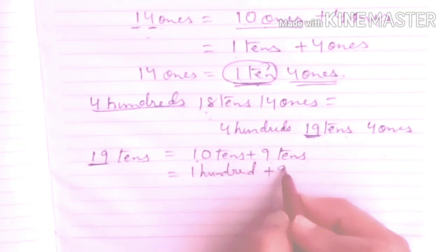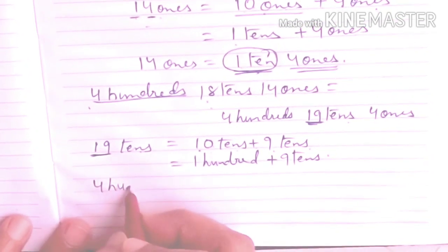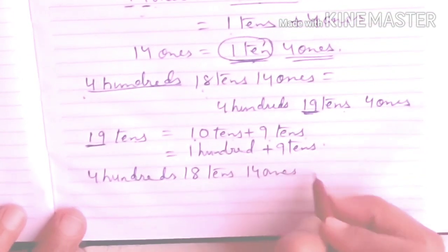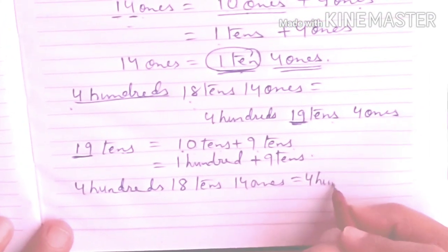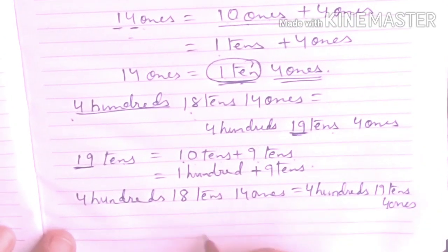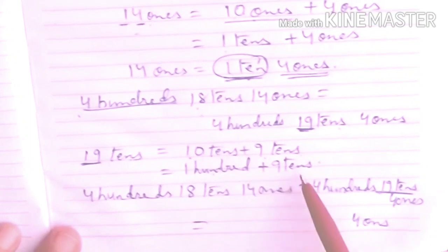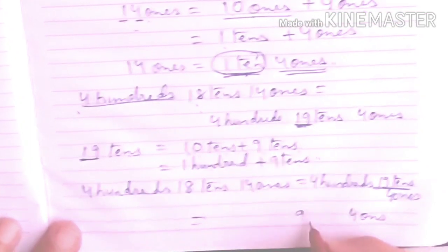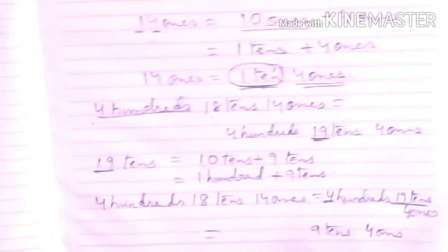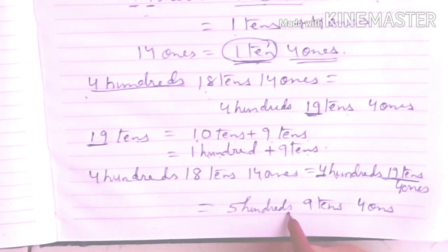So the number that we had - let's see. 4 hundreds, 18 tens, 14 ones. We wrote it as 4 hundreds, 19 tens, 4 ones. Now we are seeing that in the ones place we have 4 ones. This 19 tens we just resolved into 1 hundred and 9 tens. So the tens place has what remaining? 9 tens. And the hundreds place had 4 hundreds, and this 1 hundred got added to 4 hundreds. So how much did it become? 5 hundreds.